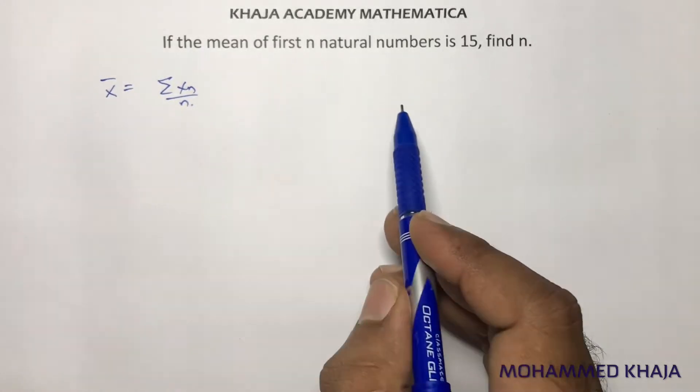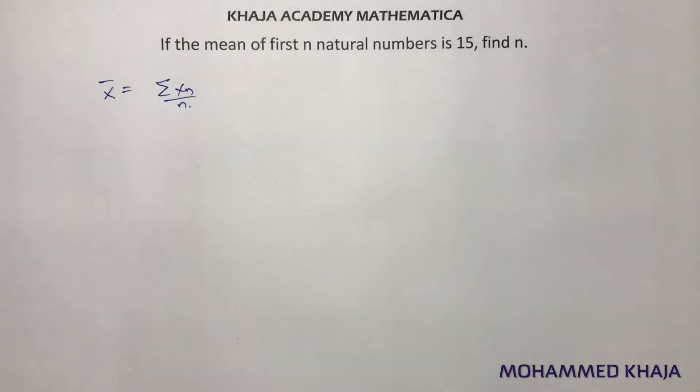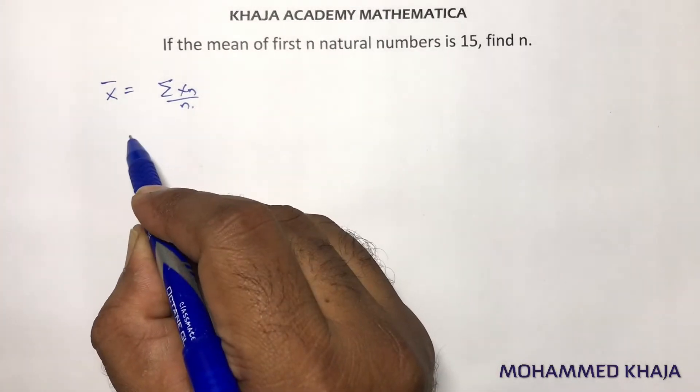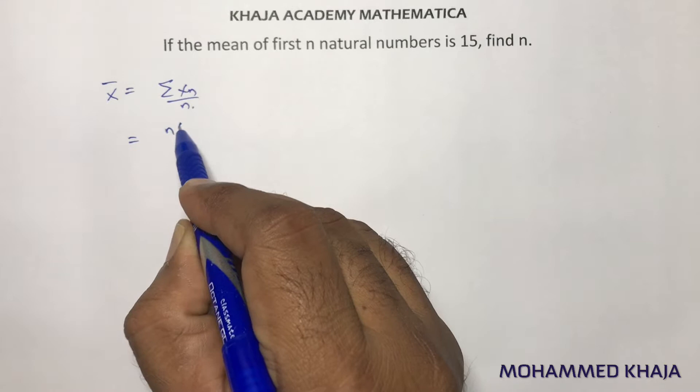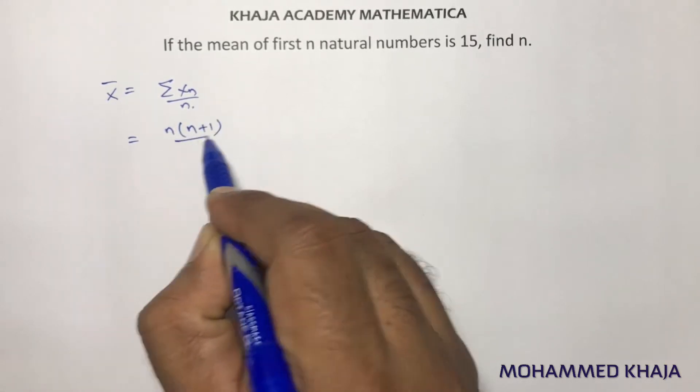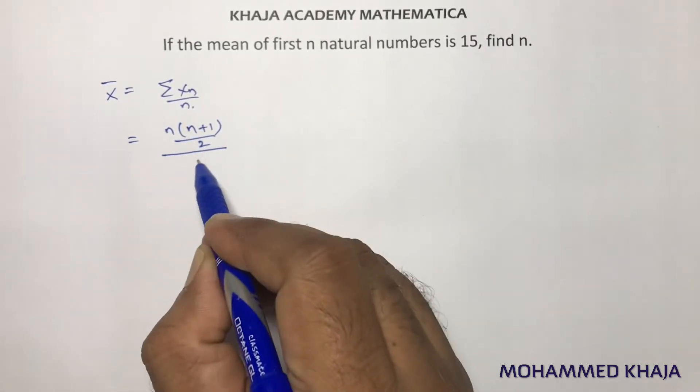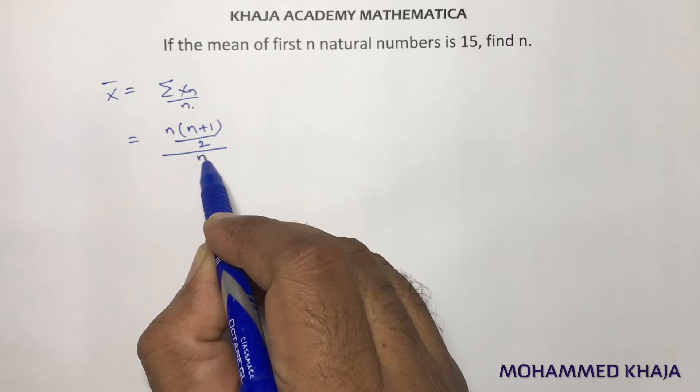Mean of first n natural numbers. If you use the Gauss theorem here, sum of n natural numbers is n into n plus 1 by 2, divided by number of natural numbers n.